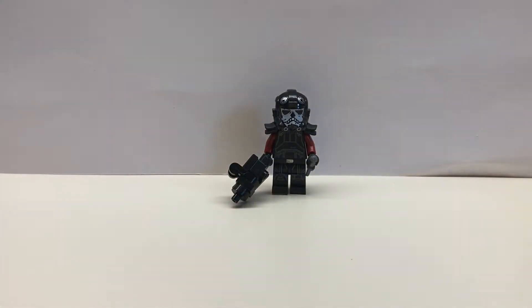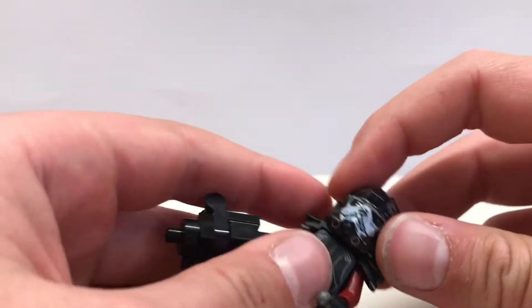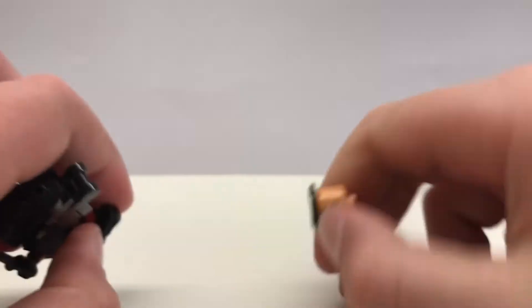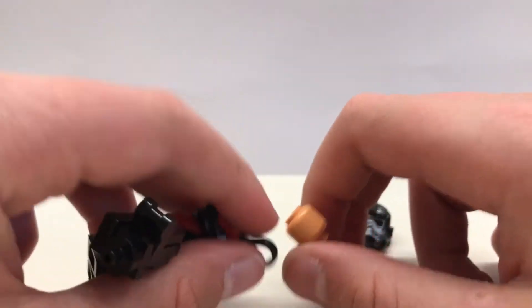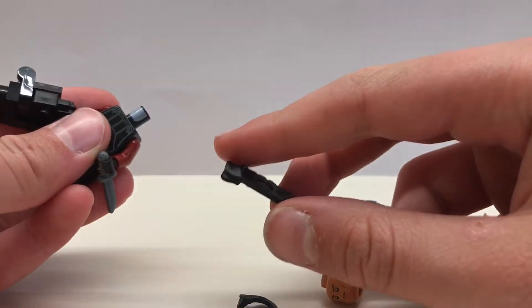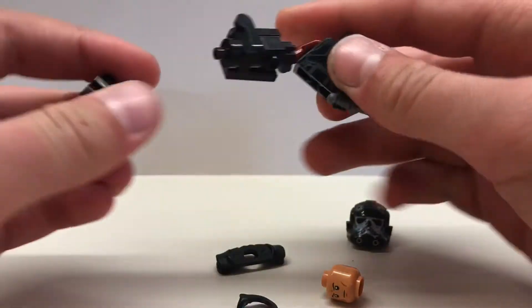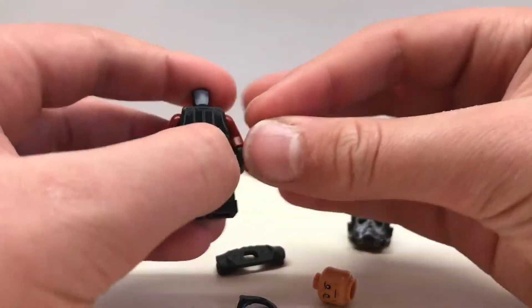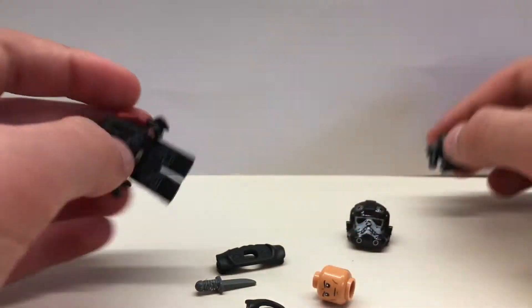First, let's look at Wrecker. I made him using this helmet which comes from the Black Ace, a standard clone trooper face, a black moustache, Mr. E's neck bracket piece, Death Trooper legs and body, dark red arms, black hands, a knife, and this gun which I'll show you how to make in a minute.